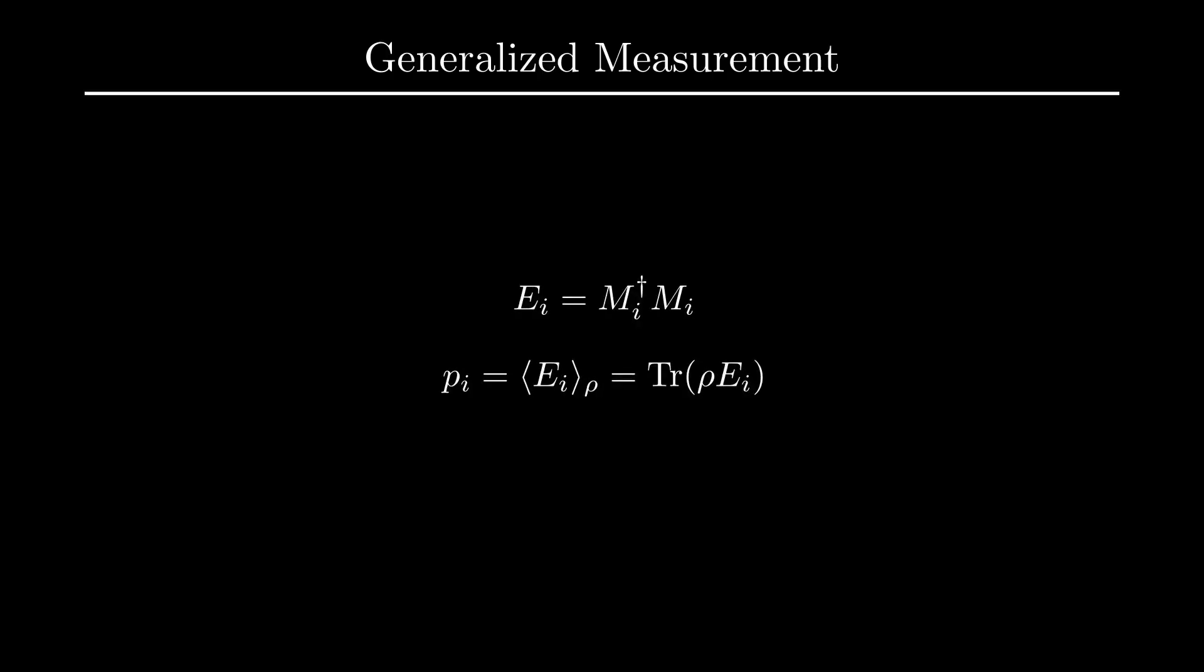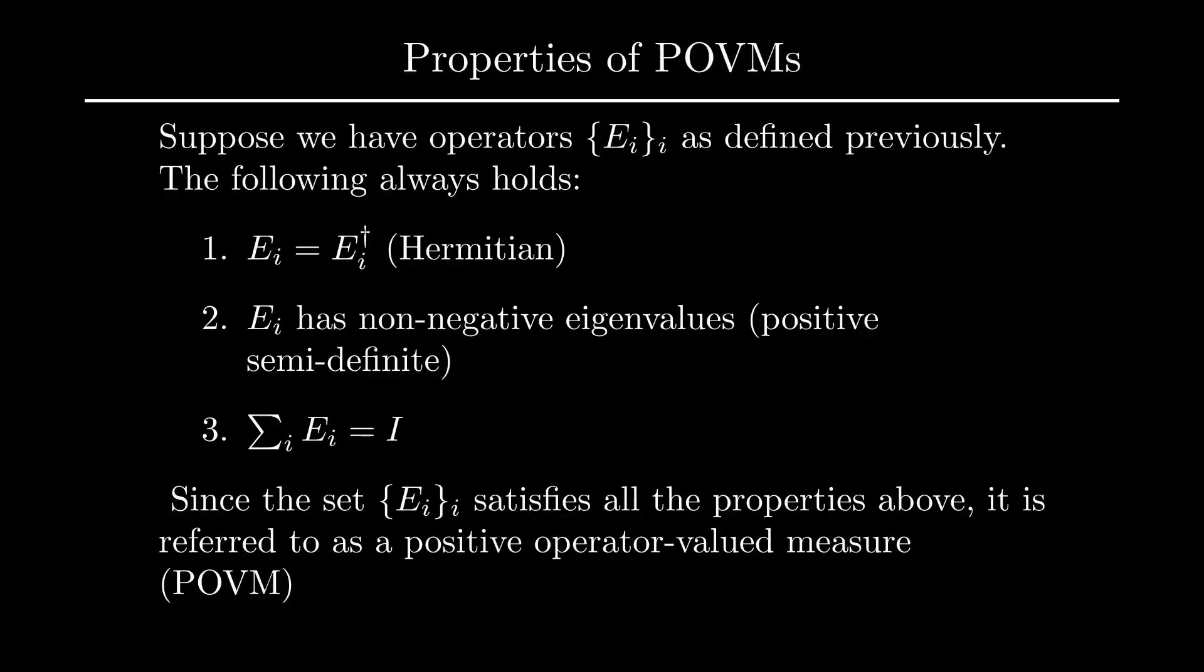If we define E_i equals M_i dagger M_i, we can see that for a density matrix rho, we can compute the probability of getting output B_i by taking the trace of rho times E_i. We can observe that these E_i operators satisfy some nice properties. Firstly, these operators are Hermitian, since their conjugate transpose equals E_i. Furthermore, since the expectation value of E_i is a probability value which is always non-negative, we have that the E_i operators are positive semi-definite. Lastly, by the completeness condition we established for M_i, we have that the sum of all the E_i's gives us the identity. By partitioning unity into these PSD operators, we have created a special measure known as a positive operator valued measure or POVM.